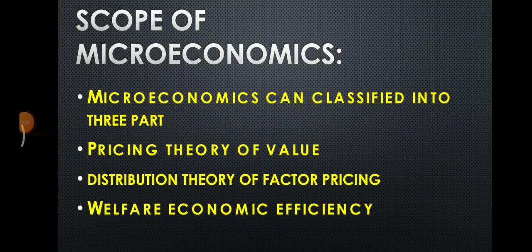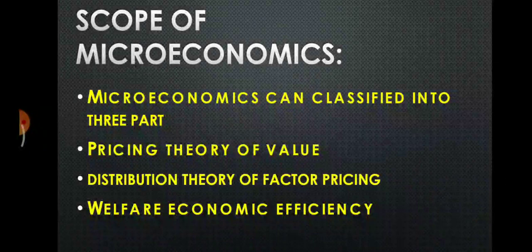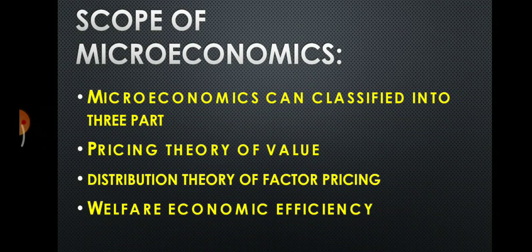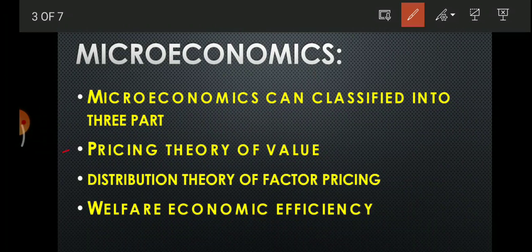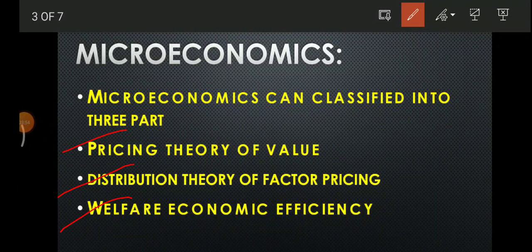Now we move to the scope of microeconomics. The microeconomics study is classified into three parts: first, pricing theory of value; second, distribution theory of factor pricing; and third, welfare economic efficiency. We are going to discuss each one in depth.